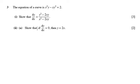Part 2A says that if dy/dx is 0, show that y equals 2x. So when dy/dx equals 0, we're going to have y squared minus 2xy over x squared minus 2xy equals 0.